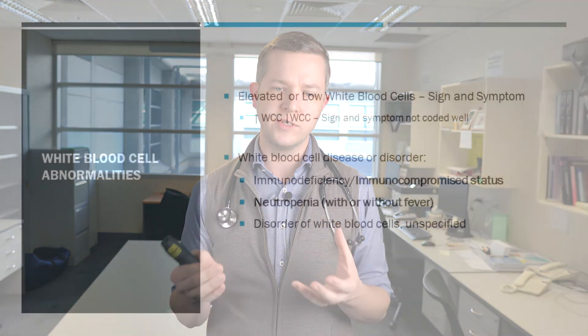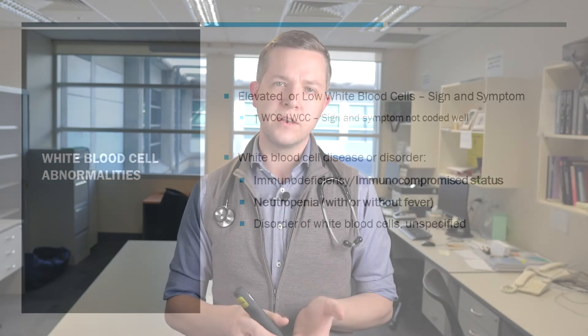In terms of white cell counts and abnormalities in cell numbers, these are coded as signs or symptoms — so they are not diagnoses in themselves. Things like leukocytosis, neutrophilia, or neutropenia alone do not code well. However, what does code — and this will be in effect for at least another 18 months — is immunodeficiency or immunocompromised status, which may be secondary to a qualitative or quantitative deficiency in the white cell count. Neutropenia specifically, with or without fever, does actually code well. Otherwise you'll get 'disorder of white cells unspecified,' which doesn't work very well. Immunocompromised status and immunodeficiency are something we're probably missing in our coding.